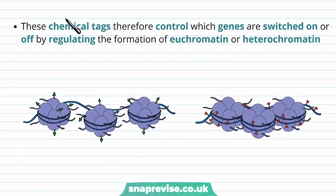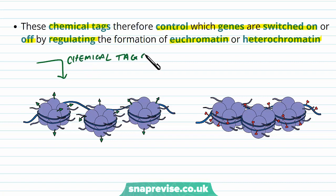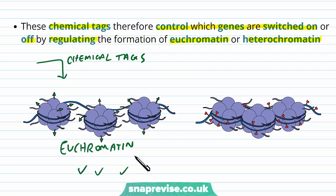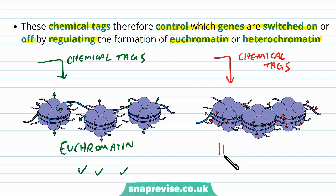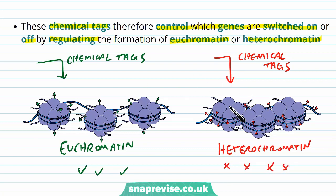Overall, these chemical tags control which genes are switched on or off by regulating the formation of euchromatin or heterochromatin. Certain chemical tags might bind to particular parts of the chromatin and cause it to be euchromatin, where it's loosely packed, at which point several genes will be transcribed. In different scenarios or different areas, other chemical tags cause tight packing of the chromatin, known as heterochromatin, and therefore genes are too inaccessible to be transcribed. These can occur in different regions of the chromatin based on different environmental influences and at different stages of an organism's life.